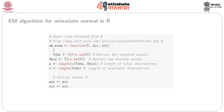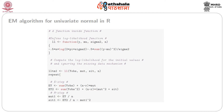Then we have Mit, which is the initial value for the mean that the user should provide, and Sit, which is the initial value of the standard deviation that the user should provide. The objective here is to estimate the mean and the standard deviation for a univariate normal distribution having some missing observations. Now comes the body of the function, where we have the vector y.